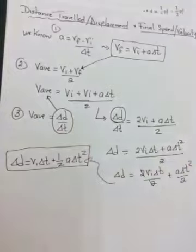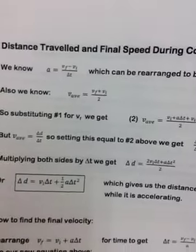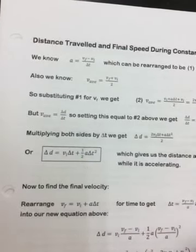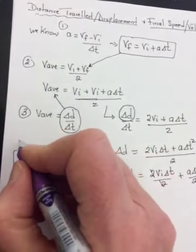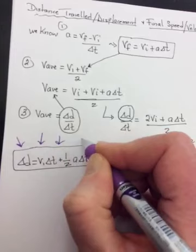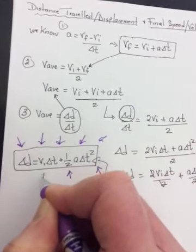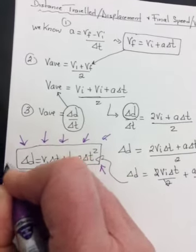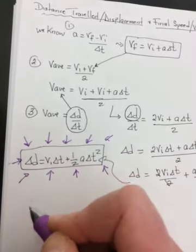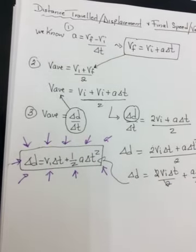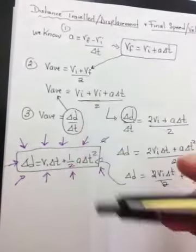And this is our first wonderful, amazing equation. You have it on this sheet that I gave you the other day. See it right there in the middle, boxed. So take your highlighter, take your colored pencils, take whatever. Highlight it, box it, put arrows around it, have fireworks coming out of it, put hearts around it. And this is probably the most used equation in all of physics. Delta D is equal to VI delta T plus one half a delta T squared. So that's number one, that's the one for distance traveled and displacement.